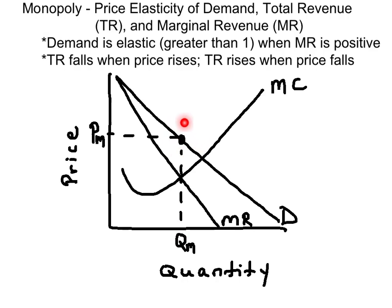Now in this region of the demand curve, the price elasticity of demand is greater than 1 — it's elastic. The reason I know this is because the corresponding marginal revenue in that region of the demand curve is positive. So whenever the marginal revenue curve is positive, the corresponding demand curve is elastic. This means that as the price rises along this region, total revenue falls. As the price falls along this region where marginal revenue happens to be positive, total revenue will rise.